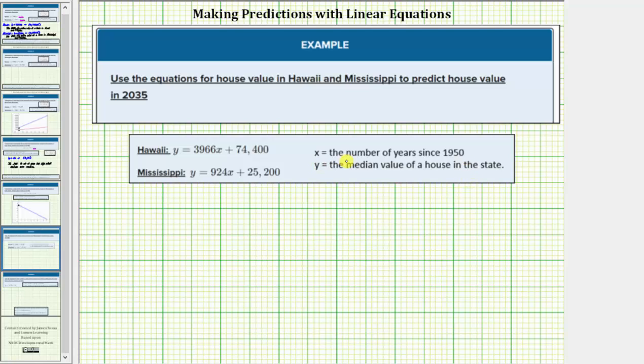The first step is to determine what x value represents the year 2035. Because x equals the number of years since 1950, for 2035, x is equal to the desired year of 2035 minus the base year of 1950, which equals 85.